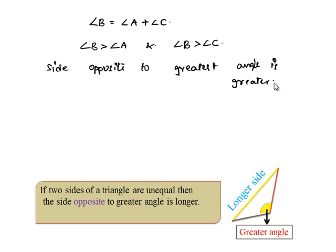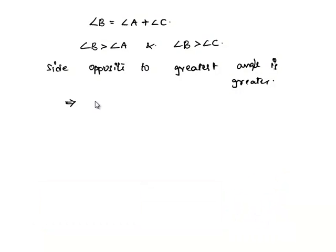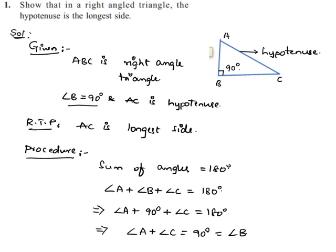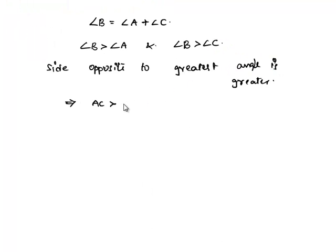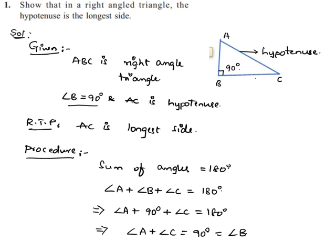Here we can see that the side opposite to angle B is AC, which is greater than the side opposite to angle A, which is BC, and the side opposite to angle B is AC, which is greater than the side opposite to angle C, which is AB.